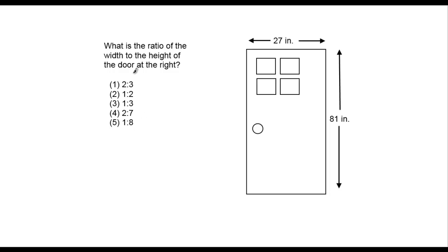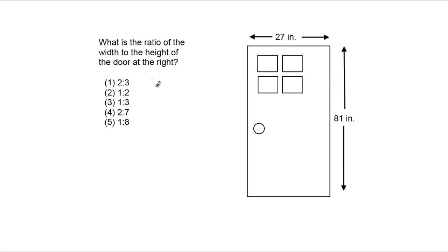So before we do any calculations, we need to remember that the way you read a ratio is, for example, the first one, 2 to 3. This colon is read as to. So 2 to 3, 1 to 2, right? So it's x to y, whatever it is.